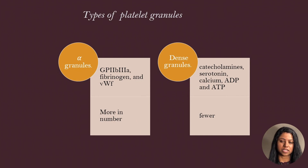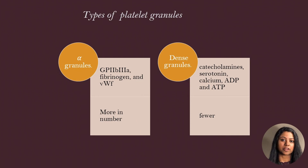Dense granules release their contents when platelets are aggregated, and their contents aid in platelet aggregation. Dense granules store ATP, catecholamines, serotonin, and calcium. Glycoprotein 2b3a acts as a receptor for fibrinogen on the surface of platelets.